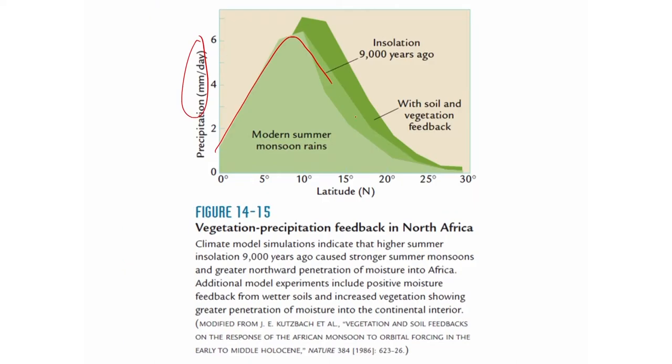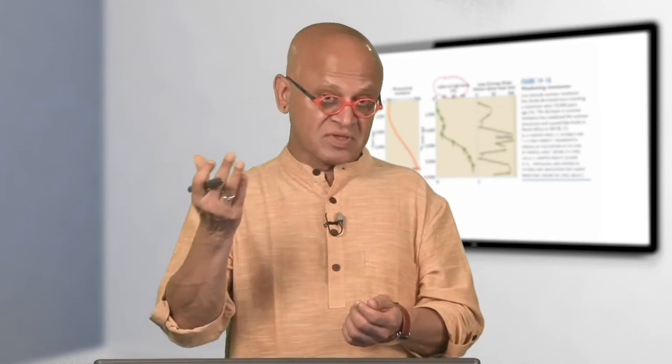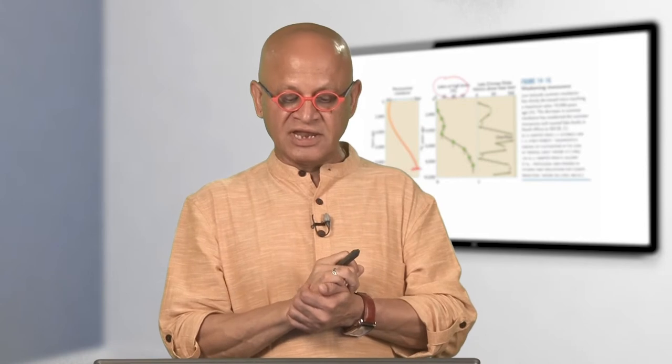This is basically showing that vegetation feedback is a good effect. The rainfall was dropping off at about 15 degrees, but with soil and vegetation feedback you can see that the rainfall increased and covered a much larger part of northern Africa. Sometimes you might think — of course, forests make climate better because they have humidity, local evapotranspiration, and they create a local microclimate. But then you have to worry about what happens if you remove part or all of the forest. In general, planting trees is a good thing.